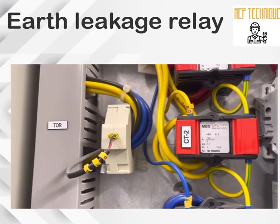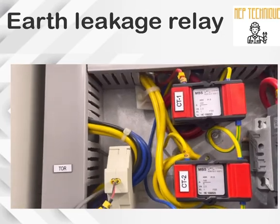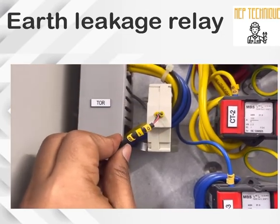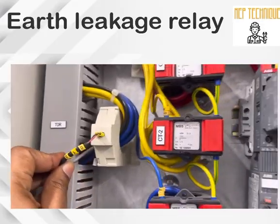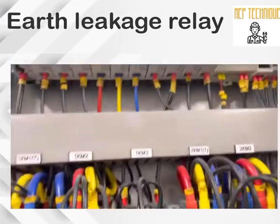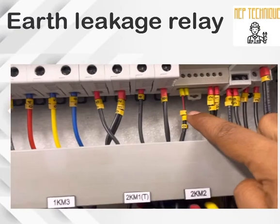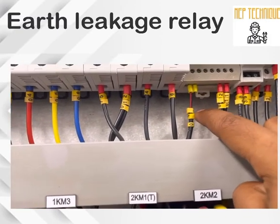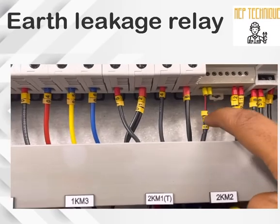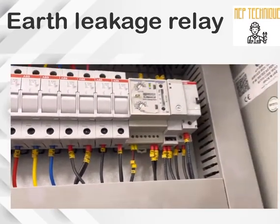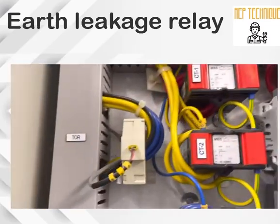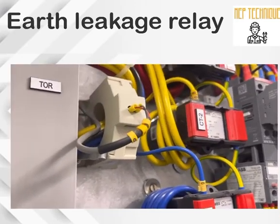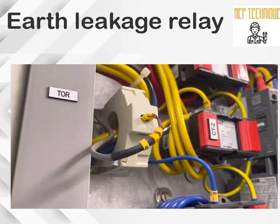This is the CBCT — core balance current transformer — that we discussed previously. It is installed over the three-phase cables: R phase, Y phase, and B phase. The red and black cables are connected with the earth leakage relay. If there is any imbalance current, this CBCT will sense it and the earth leakage relay will trip our MCCB.